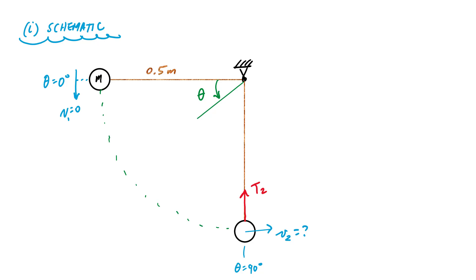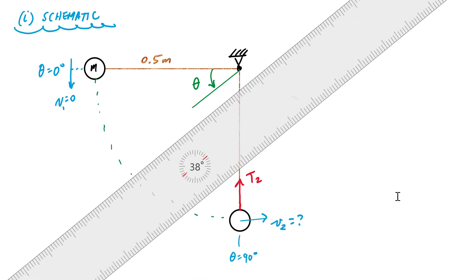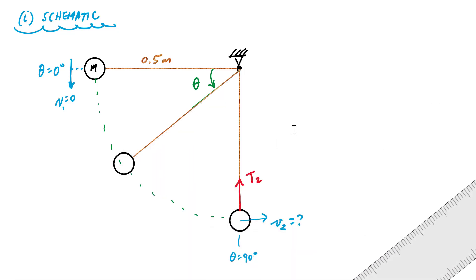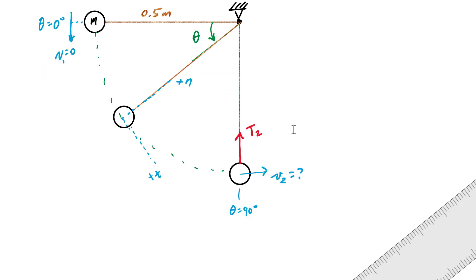When we analyze this problem, we have a beginning and an end. We want to draw a free body diagram at some intermediate angle along the path. Moving on a circular path really suggests using NT components. The positive tangential direction is toward increasing path, and the positive normal direction points toward the center of curvature. The forces acting on the particle are the weight downward and the tension force from the chord.